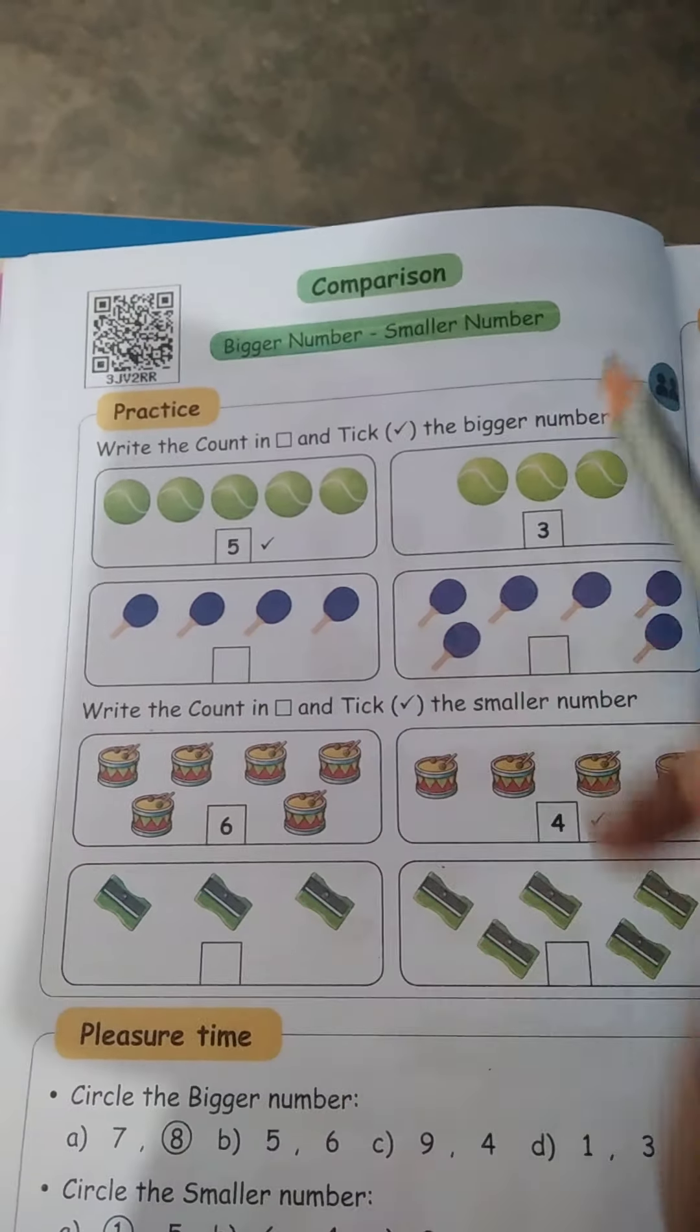1, 2, 3, 4. 4 pannu. Next: 1, 2, 3, 4, 5, 6. Which is bigger number? Which is bigger, 4 or 6? Yes, 6 is bigger. Tick the 6. Next.